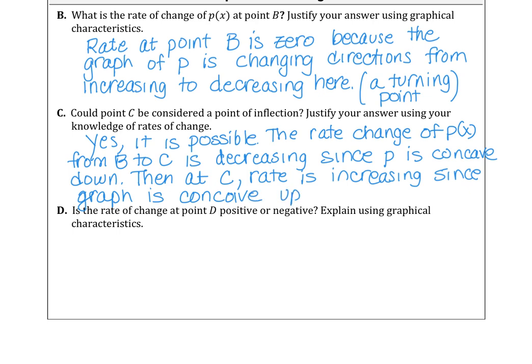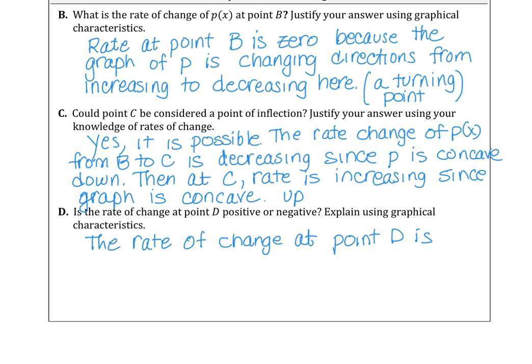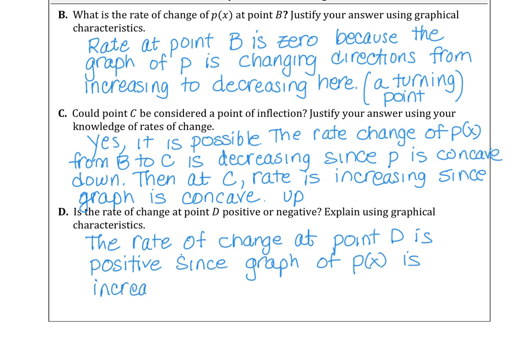The last question: is the rate of change at point D positive or negative? The rate of change at point D is positive because the graph of P(x) is increasing there. So we have a positive rate of change. That's the end of lesson four.